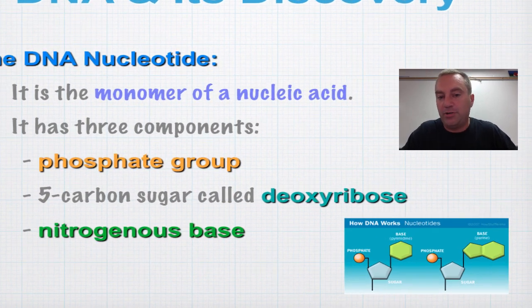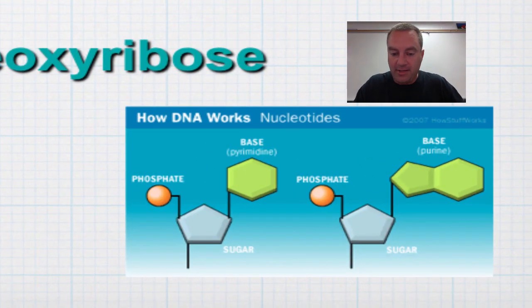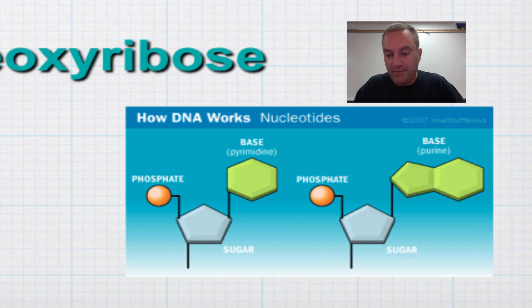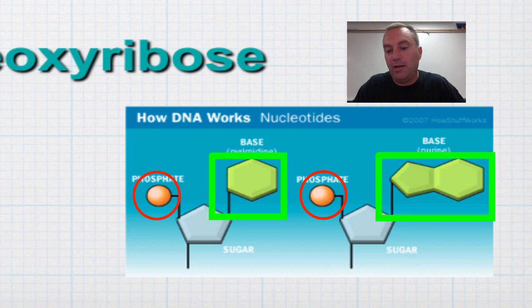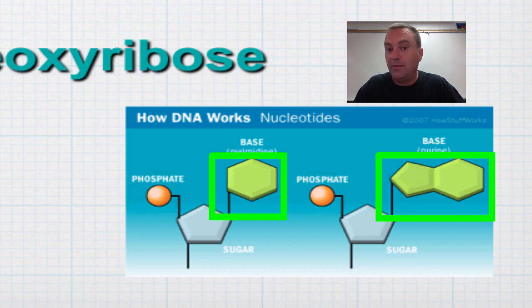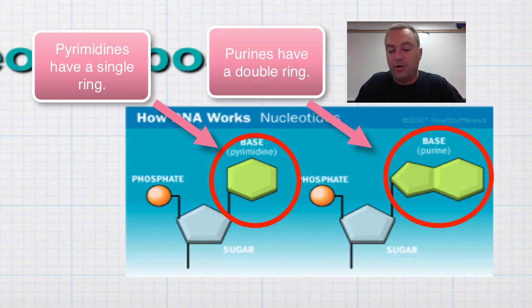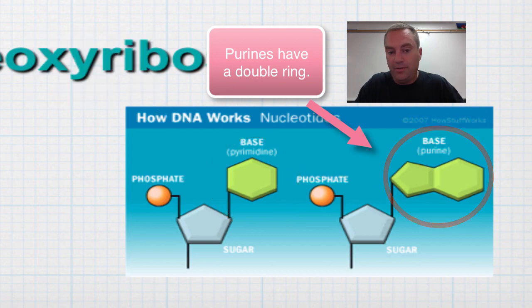Let's focus on the picture below. The 5-carbon sugar is the pentagon — remember, a pentagon has five sides. Over on the left, kind of coming out of the chimney, is the phosphate group. And then to the right, in green, are the carbon rings that contain nitrogen. These nitrogenous bases come in two flavors: some have a single ring — those are called a pyrimidine — and some have a double ring — those are called a purine. We'll learn more about those on the next slide.